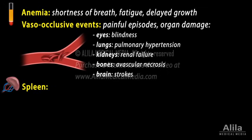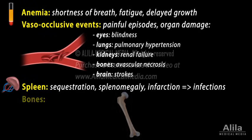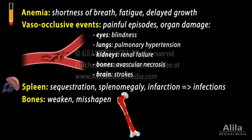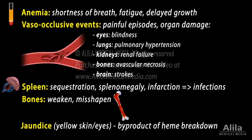The spleen has to handle large numbers of dead red cells and becomes enlarged and fibrous. Its immune function declines, making the body more vulnerable to infections. In an attempt to compensate for blood cell loss, the bone marrow tries to produce more cells and grows larger, causing bones to weaken. Other signs include jaundice, a result of rapid destruction of heme.